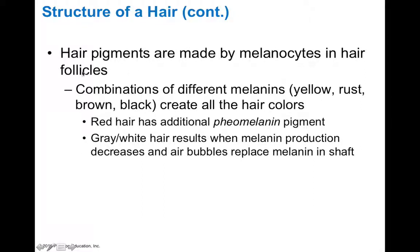Hair pigments are made by melanocytes within the hair follicle itself. Different combinations of melanins — yellow, rust, brown, or black — are what create the different hair colors. Red hair has an additional type of pigment called pheomelanin. Gray or white hair results from decreased melanin production; instead, air bubbles fill the shaft rather than melanin itself.